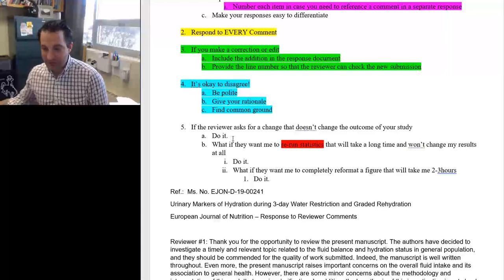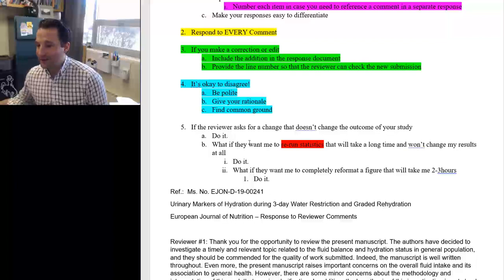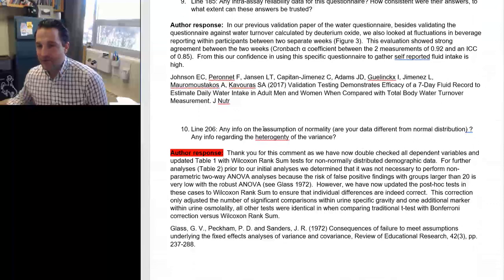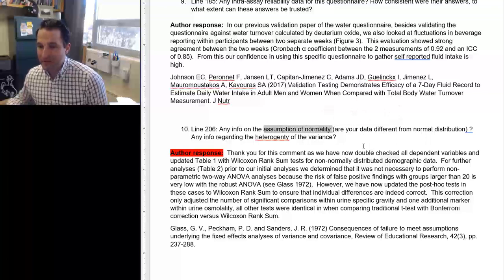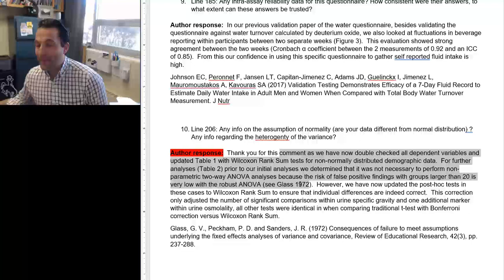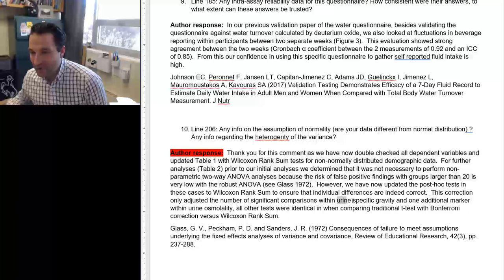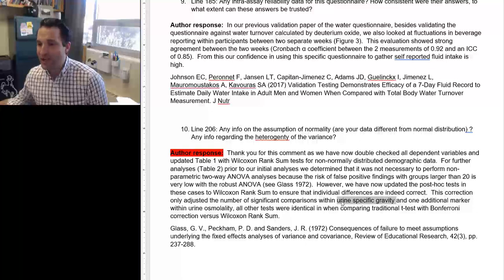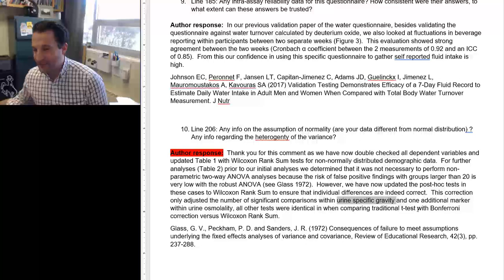If the reviewer asks for a change that doesn't change the outcome of your study, do it. Don't say, it doesn't matter. I don't need to do that. I respectfully decline to make that edit. Just do it. If it doesn't change, it doesn't matter. Here's an example. What if they want me to rerun statistics that will take a long time and won't change my results? Guess what? In this paper, somebody asked me to do it. Let's look in red. Here we go. This person wanted to know about the assumption of normality and if my data were different from a normal distribution. And guess what? I hadn't talked about that at all. And I went back and I had to rerun all my stats for normality. I think it changed one value within urine specific gravity. Because I went from a regular test to Wilcoxon rank sum test. I couldn't necessarily do my ANOVA. And it changed that one outcome.